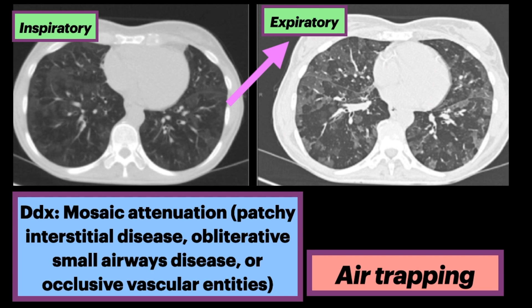In terms of the top differential diagnosis, consider mosaic attenuation, which is a term used for both small airways disease from air trapping or vascular entities such as chronic thromboembolic disease or pulmonary hypertension. Again, mosaic attenuation pattern can refer to patchy interstitial disease, obliterative small airways disease, or occlusive vascular disease.